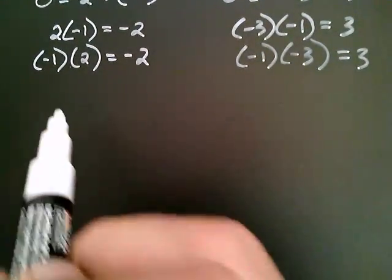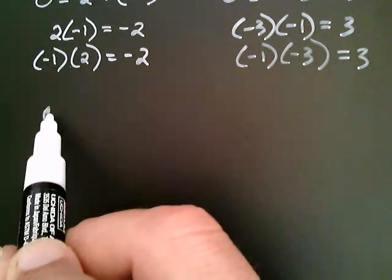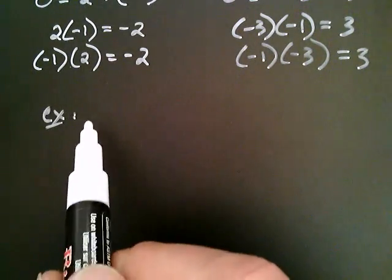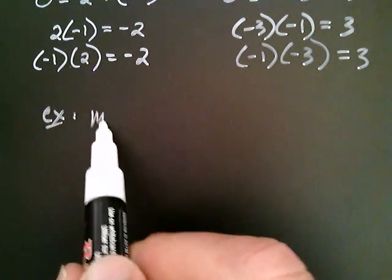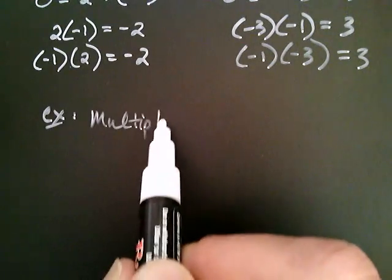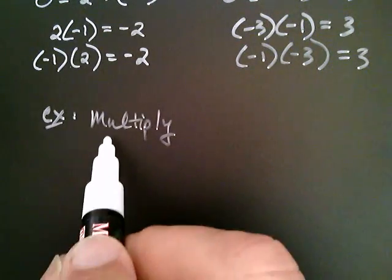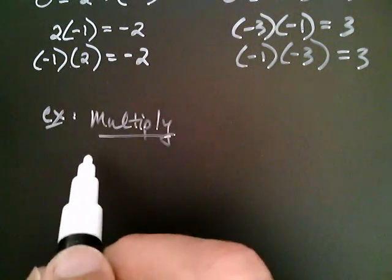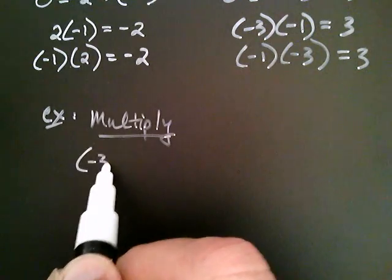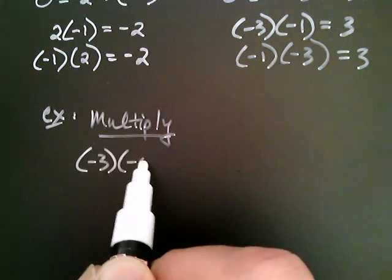So let's go ahead and multiply negative three and negative five. I know that I can write negative three in a creative way — as negative one multiplied by three.